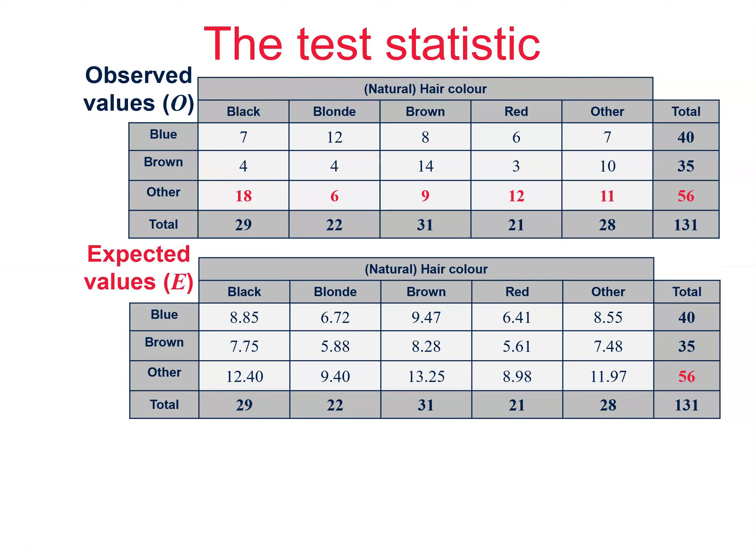What we do now is, for each cell in the table, we calculate a measure of how far away the observed value is from the expected value. As is common, we square the difference to give a positive number, which also gives more significance to values which are a long way apart.